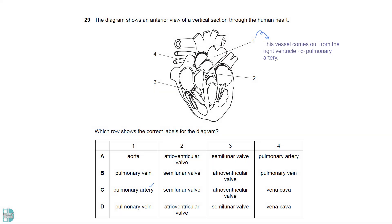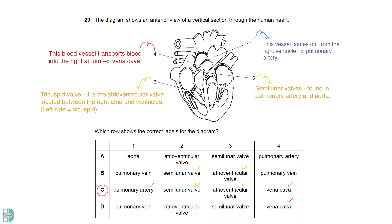One is the vessel coming out of the right ventricle. It is the pulmonary artery. In both the pulmonary artery and aorta, they are semilunar valves. Three is the tricuspid valve. Together with the bicuspid valve, they are known as the atrioventricular valves, as it is located between atria and ventricles. Four is the blood vessel transporting blood into the right atrium. It is the vena cava.